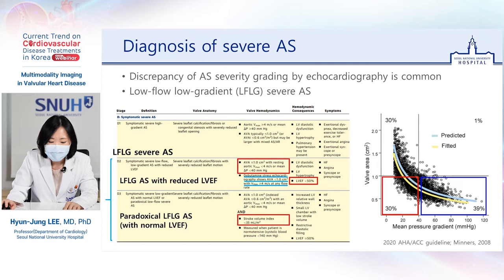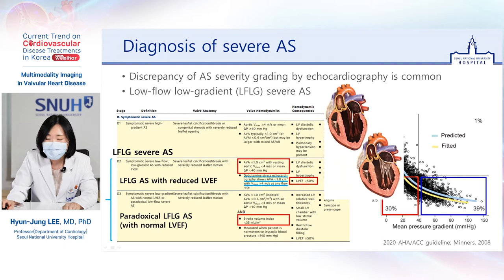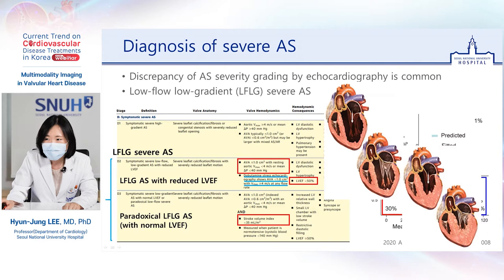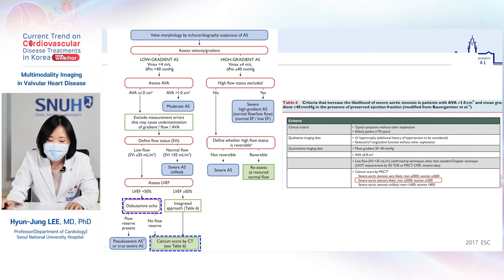Low-flow can be caused by two reasons. The first is reduced LV ejection fraction, and the second is low stroke volume due to a small LV chamber. This latter is called paradoxical low-flow, low-gradient AS with a normal LV ejection fraction, and this is often confusing to diagnose in the clinical setting. This is a diagram of normal severe AS, while this is a diagram of a paradoxical low-flow, low-gradient AS with a small LV chamber.